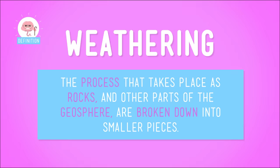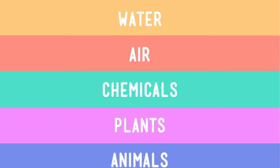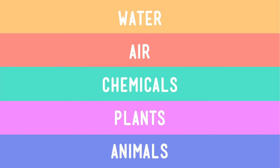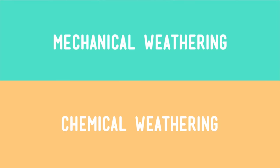I'm not talking about the weather, like if it happens to be sunny or cold or foggy outside your window right now. I'm talking about weathering, the process that takes place as rocks and other parts of the geosphere are broken down into smaller pieces. Weathering can be caused by water, air, chemicals, plants, or even animals, including us. And there are two types of weathering you need to know about: mechanical weathering and chemical weathering.